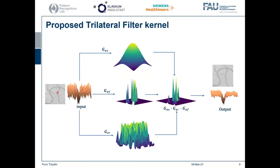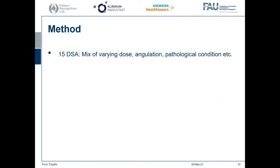When we combine the kernel for the same region of interest as demonstrated earlier, we can see that when the intensity kernel weakens, the Frangi kernel contributes to adapt the kernel, which then results in strong vessel preservation. For our study, we selected 15 DSAs tested across a mix of different dose levels, pathological conditions, and angulations, and filtered the images using both the bilateral and trilateral filter. To create comparable results, we kept the common parameters constant for both filters and additionally selected a Frangi Sigma after very careful parameterisation.